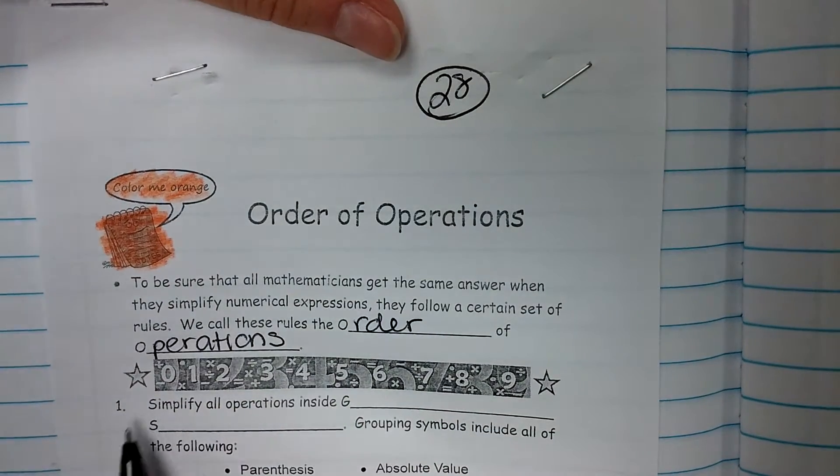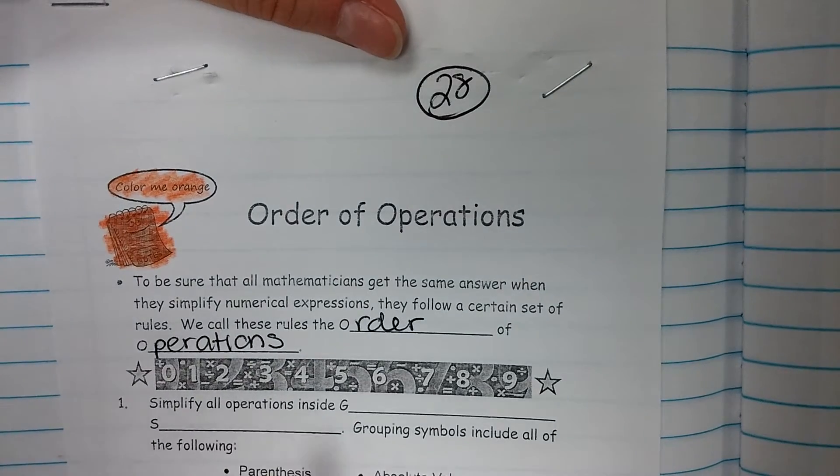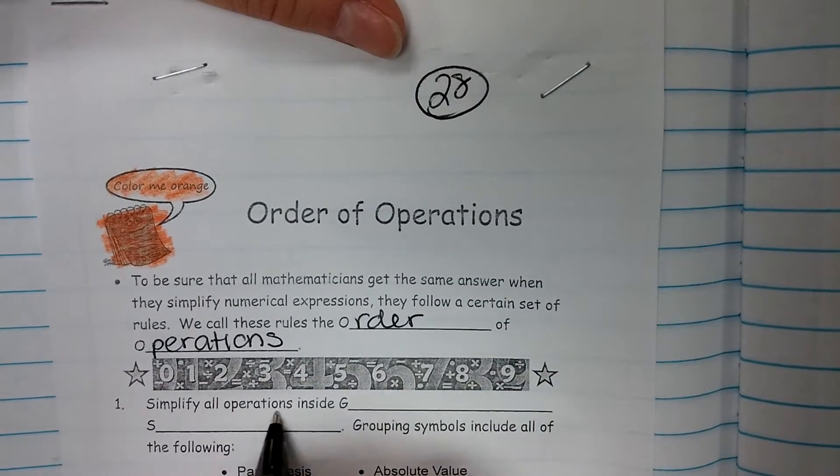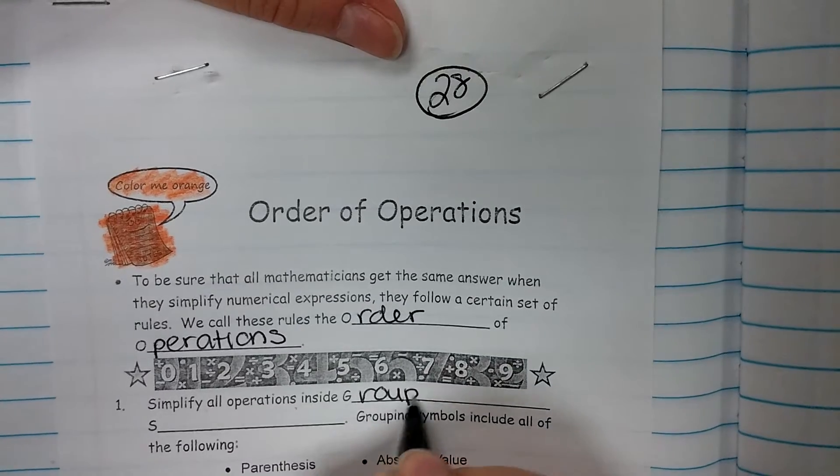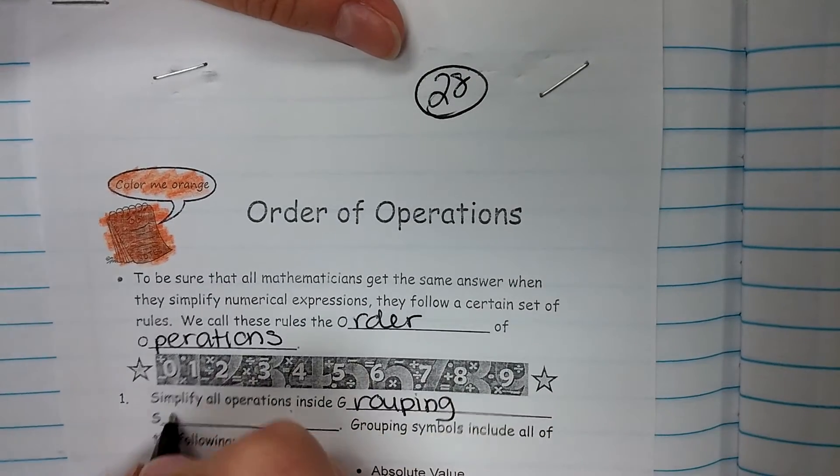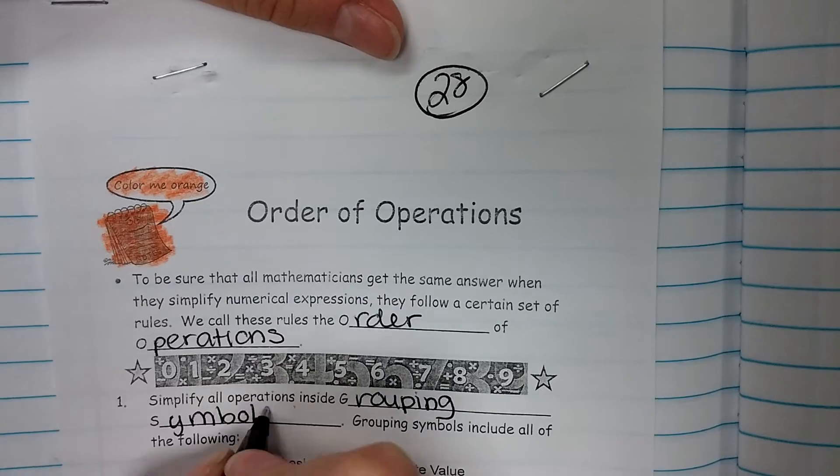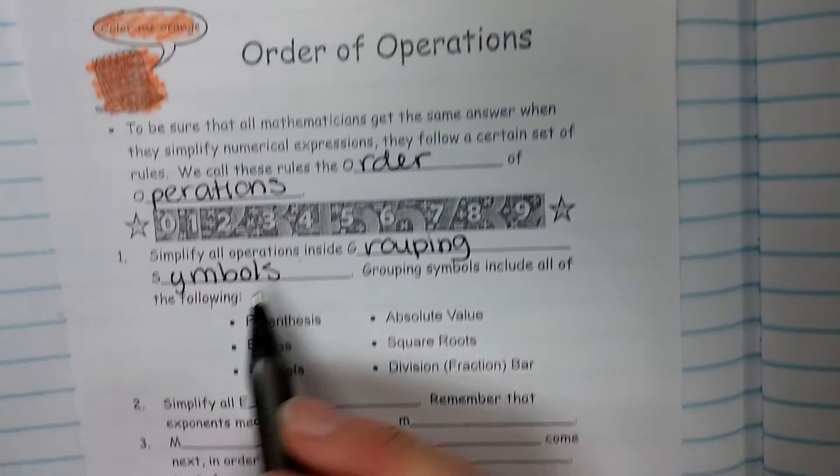So the first step in the order of operations is to simplify all the grouping symbols. Simplify all operations inside grouping symbols. Grouping symbols include all of the following things.